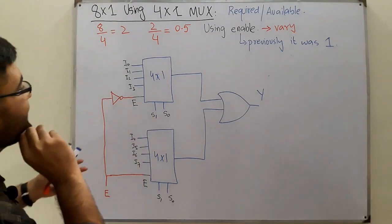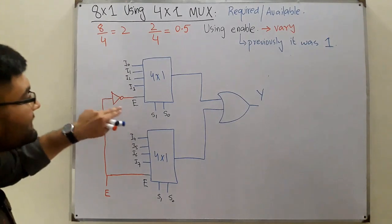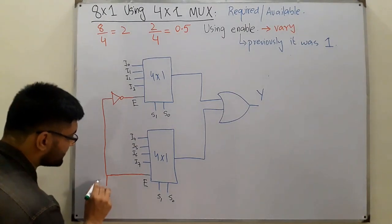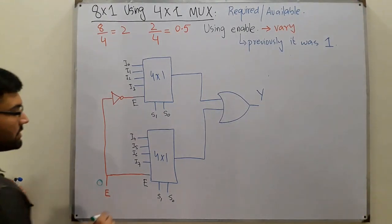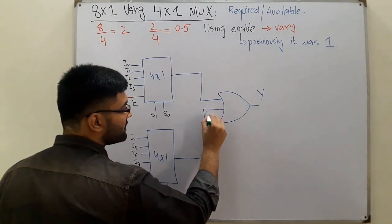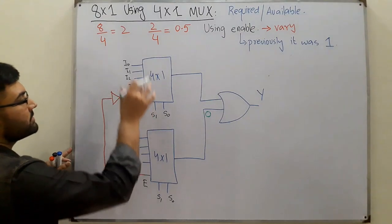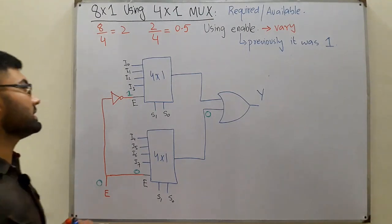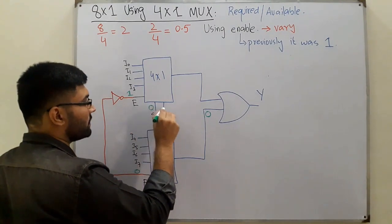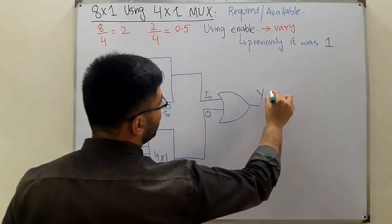For example, if we want i0 at the output, we need the first MUX working. So we give enable E = 0 — this means the first MUX gets zero... wait, we give E = 0 so the NOT gate complements it to one, turning the first MUX on. The second MUX gets zero directly and is off. Then set S1 = 0 and S0 = 0 so i0 is selected, and OR-ing gives i0 at the output Y.